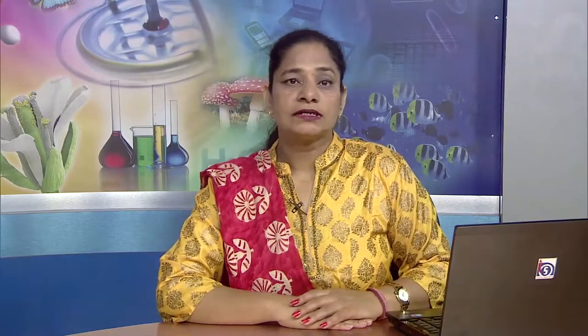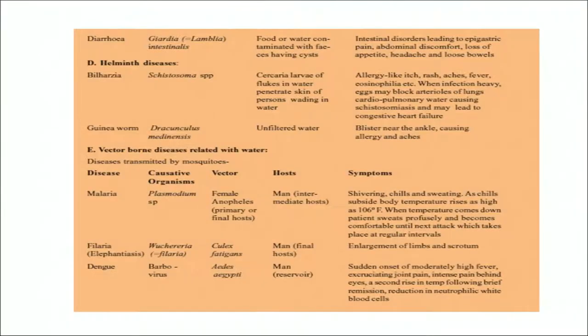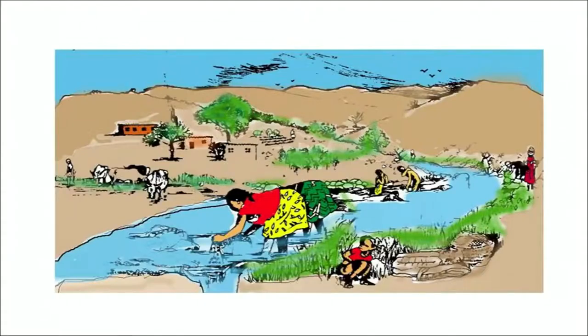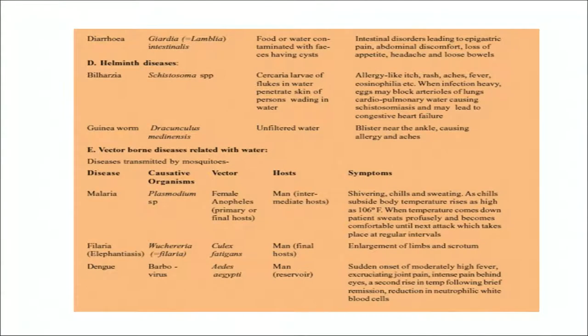The causative agents and symptoms are shown in tabular form in the next few slides. Typhoid, cholera, diarrhoea and leptospirosis are bacterial diseases. Infective hepatitis is a viral disease. Amoebic dysentery is a protozoan disease. Bilharzia and guinea worms are helminth diseases, and malaria, filaria and dengue are vector-borne diseases.